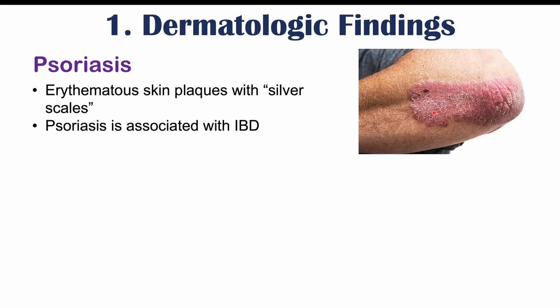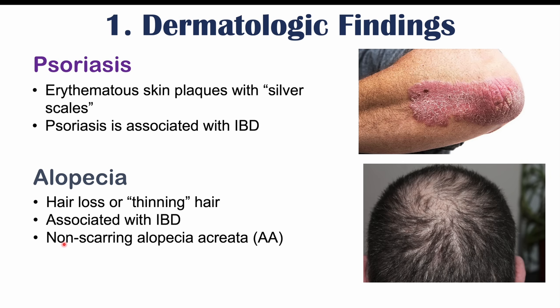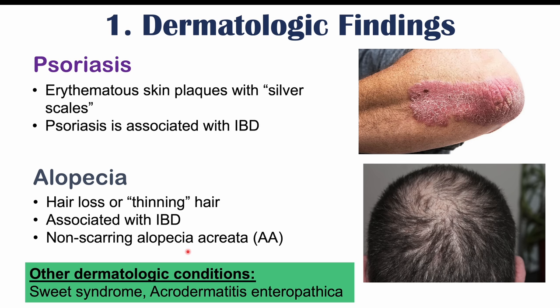Another dermatologic finding associated with Crohn's disease is alopecia — hair loss or thinning hair. More specifically, it is non-scarring alopecia areata, which is associated with IBD. Other dermatologic conditions associated with Crohn's disease include Sweet syndrome and acrodermatitis enteropathica.